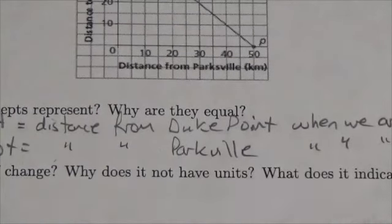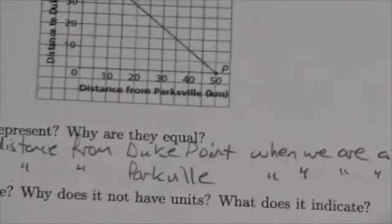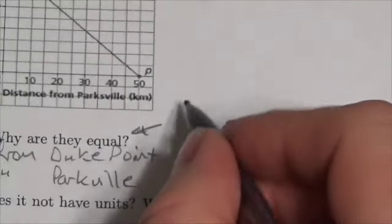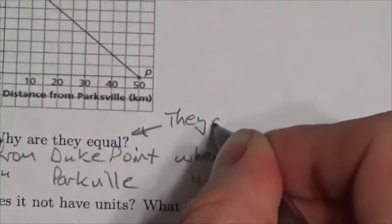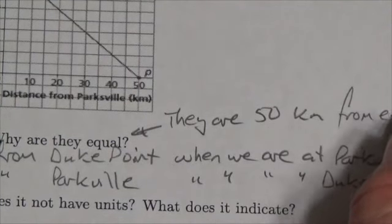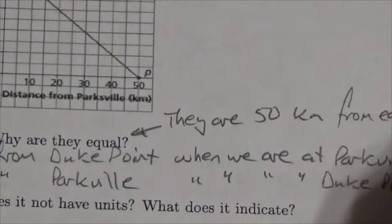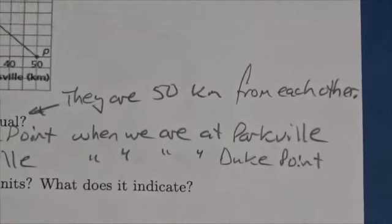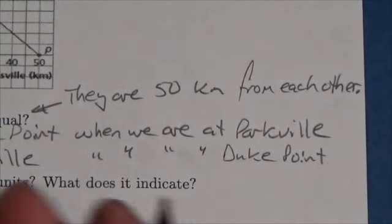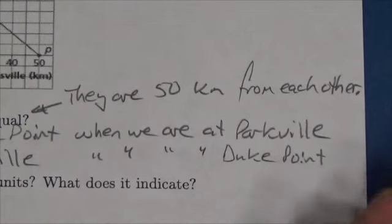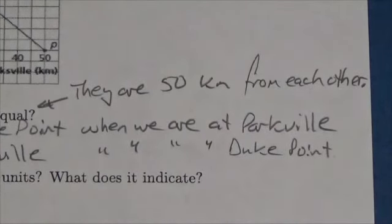Now the second question is, why are they equal? The answer is they're equal because they are 50 kilometers from each other. When you're at Parksville, you're 50 kilometers away from Duke Point. When you're at Duke Point, you're 50 kilometers away from Parksville. That's why. That's kind of a reciprocal relationship.